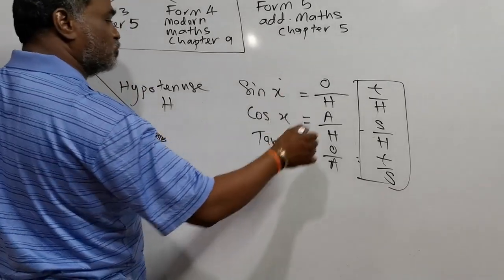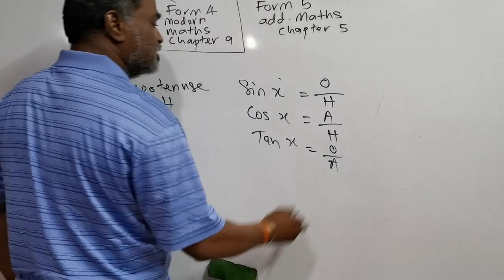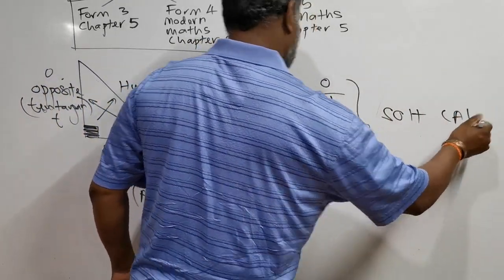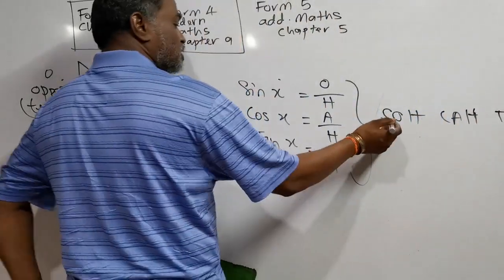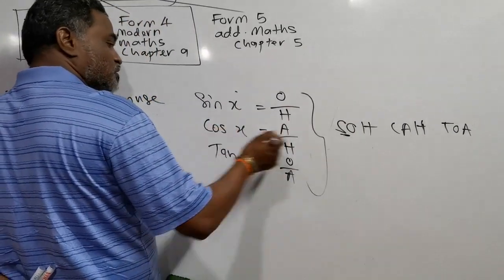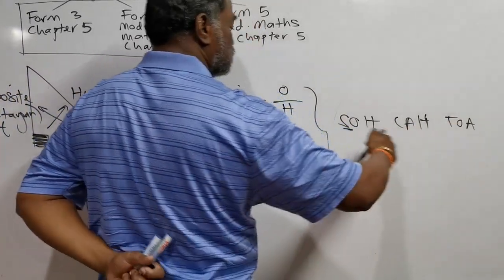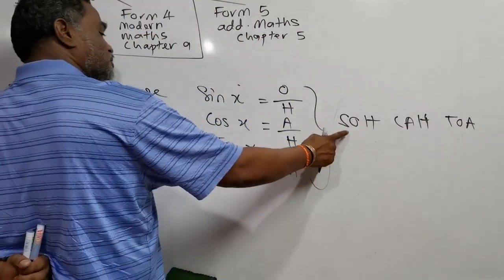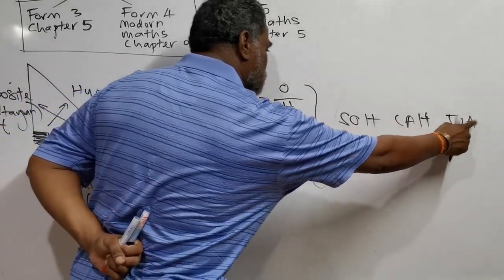In English, the short form to remember is SOH-CAH-TOA. The meaning: sin is opposite over hypotenuse (SOH), cos is adjacent over hypotenuse (CAH), tangent is opposite over adjacent (TOA). Just remember this and you can answer the questions.